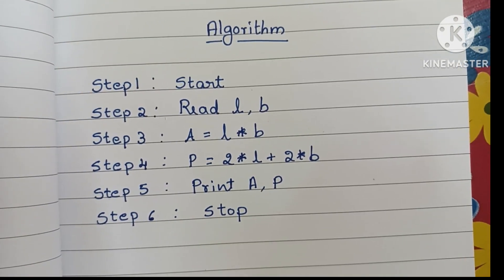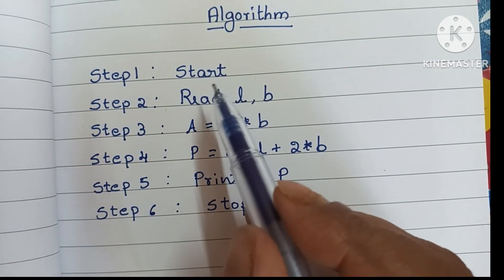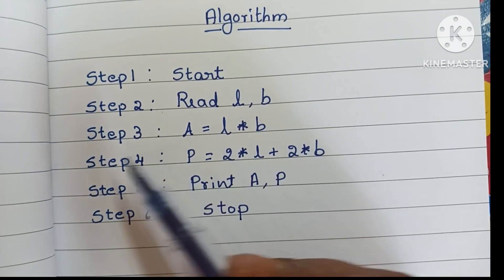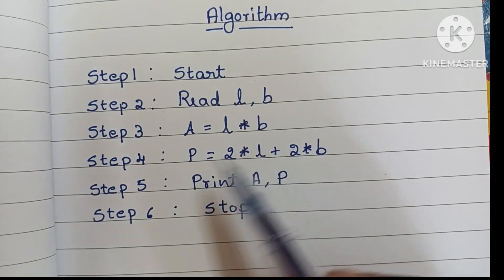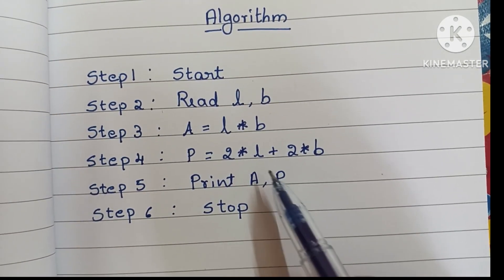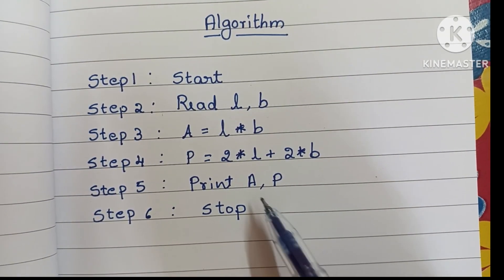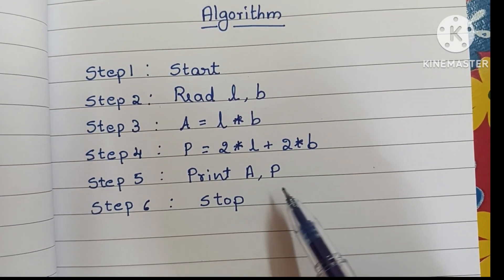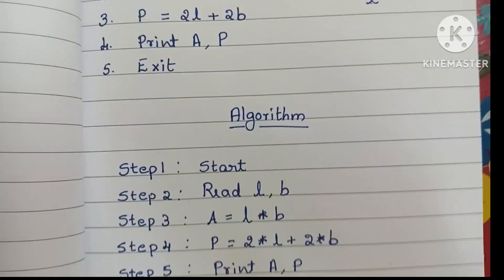To recap the algorithm: step 1 — start. Step 2 — read L and B. Step 3 — calculate area, A = L × B. Step 4 — find perimeter, P = 2L + 2B. Step 5 — print A and P. Step 6 — stop the algorithm using the stop statement.